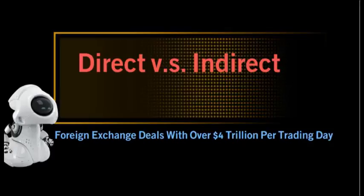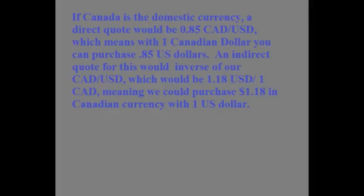So if you are looking at the Canadian dollar as the domestic currency and the US dollar as the foreign currency, the quote would be the CAD/USD. The direct quote varies the foreign currencies, and the domestic currency remains fixed at one unit. For example, if Canada is the domestic currency, a direct quote would be $0.85 Canadian dollars is equivalent to $0.85 US dollars.